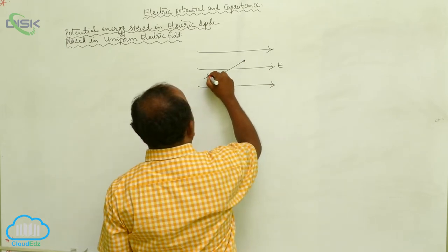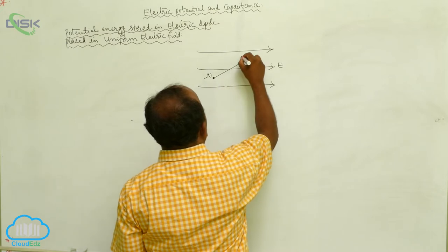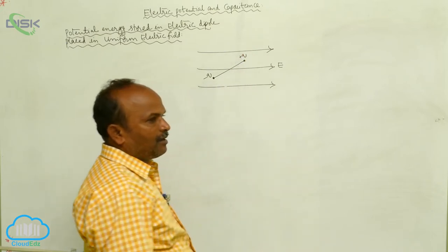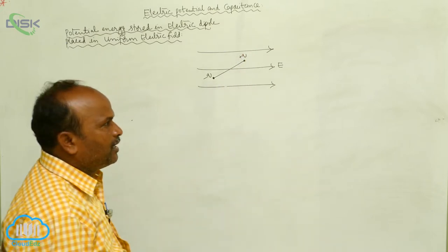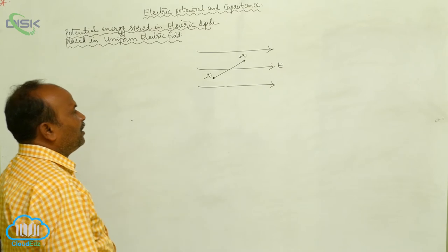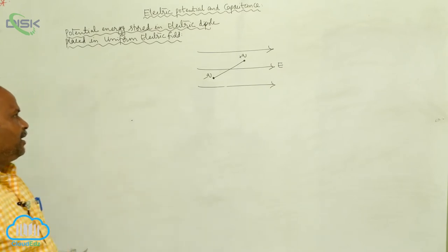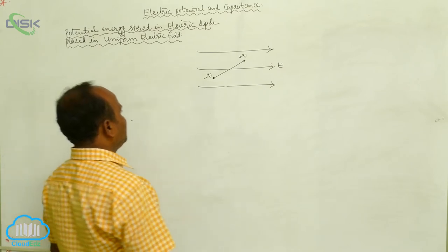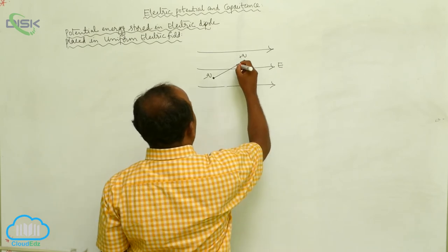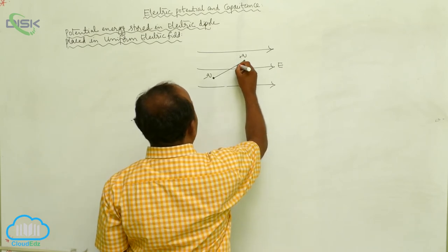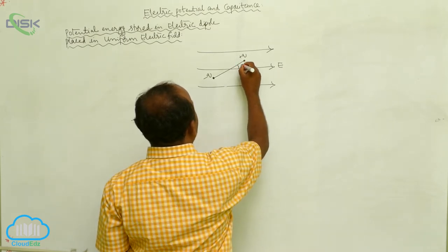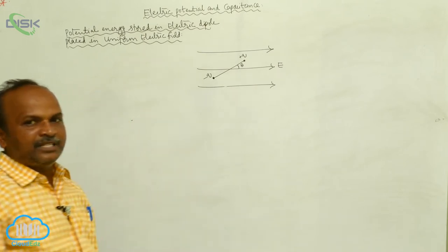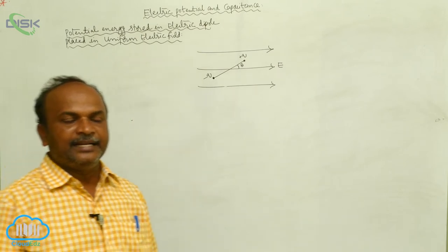There is a negative charge and there is a positive charge — this is the dipole. This dipole is making an angle theta with the electric field.